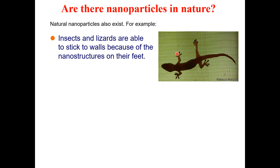You may have observed lizards sticking to walls in your house or hostel and wondered why humans cannot do the same. It is because lizards and other insects have nanostructures on their feet — smaller nanoscale objects — which allow them to easily adhere to wall surfaces. This is an example of nanotechnology existing in nature.